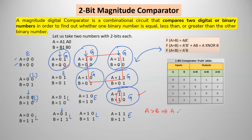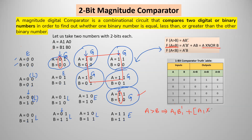Now we write the equation for 2-bit comparison. For a greater than b, the MSB should satisfy a1·b1'. For the combinations where MSB bits are equal, the equality equation is used: f(a = b) = a XNOR b. So we write it as a1 XNOR b1. And the LSB bits should satisfy a0·b0'. This gives the complete expression for a greater than b.